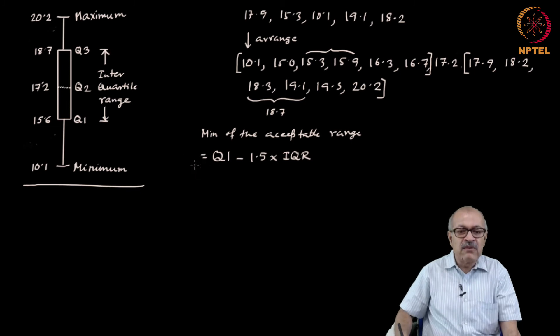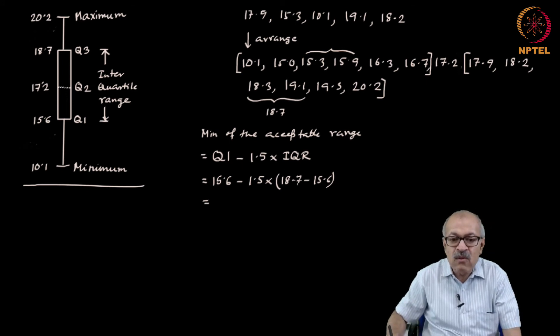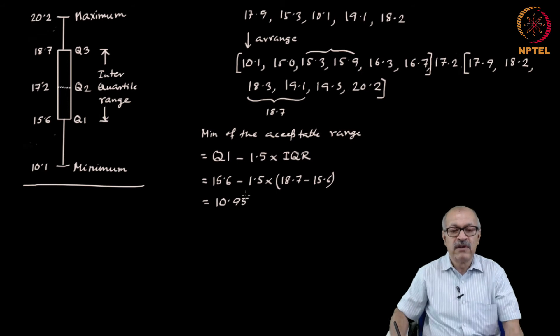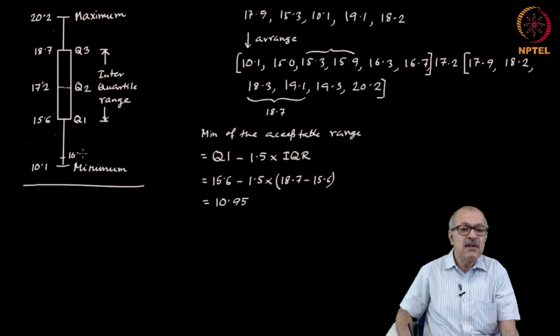The standard procedure is that the minimum of the acceptable range is the minimum of the box minus 1.5 times the interquartile range. Interquartile range is the distance between Q1 and Q3. For example, in this particular problem it is Q1, 15.6 minus 1.5 times interquartile range, 18.7 minus 15.6, and this turns out to be 10.95. Now, notice the 10.95 is above 10.1. So, if the minimum of the acceptable range ends at 10.95 then 10.1 is an outlier.